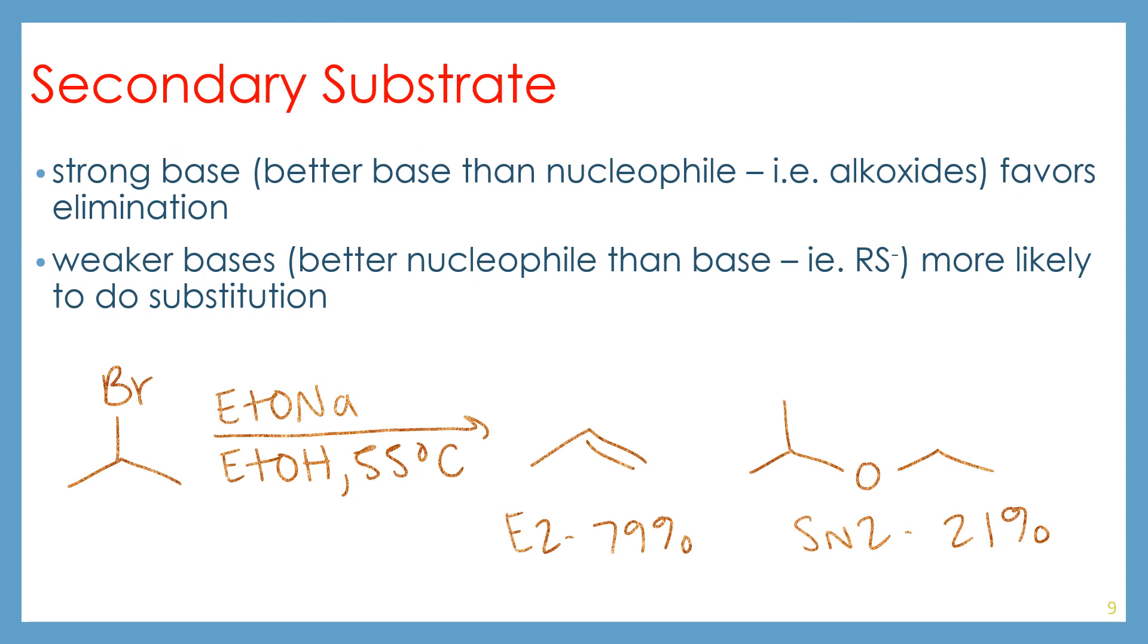If we have a secondary substrate and you react with something that is a strong base, so it works better as a base than a nucleophile, such as alkoxides, it's probably going to favor elimination. If you have a weaker base, something that works better as a nucleophile than a base, such as alkyl thiolates, we are more likely to see substitution. So in this example here, we're reacting with sodium ethoxide and ethanol in the conditions that we've been seeing over and over through these slides. We're still going to see primarily elimination and very little SN2.